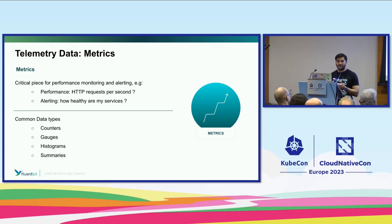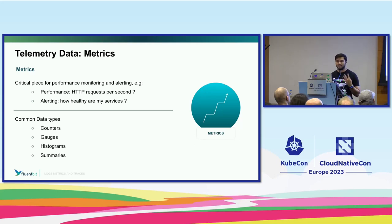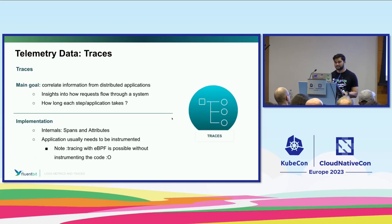We have a lot of different types of metrics — things like CPU metrics, StatsD. We've really cornered into four common data types around metrics: your counters, gauges, histograms, and summaries — things that are very well known within the Prometheus and OTEL ecosystem.